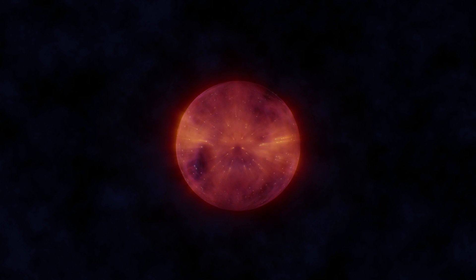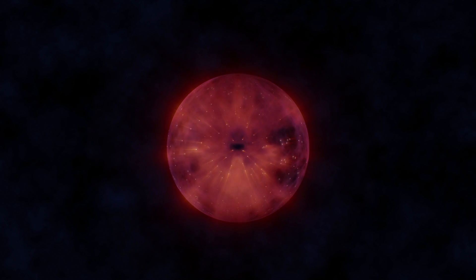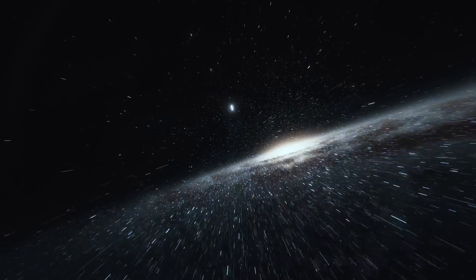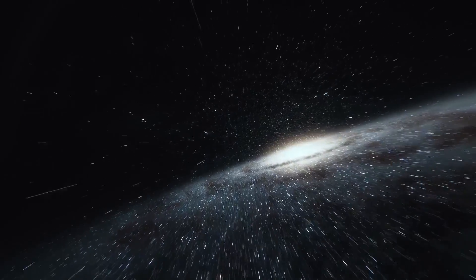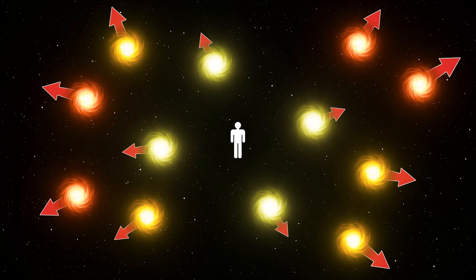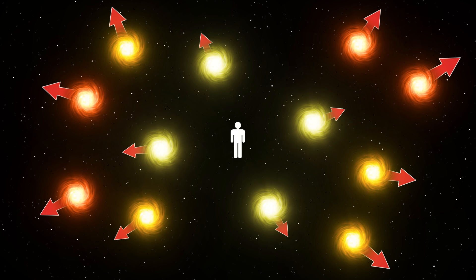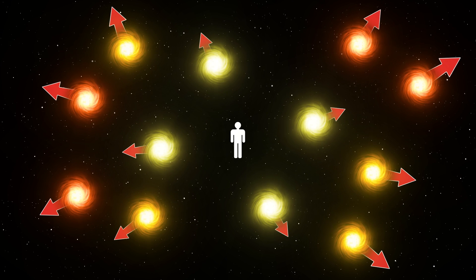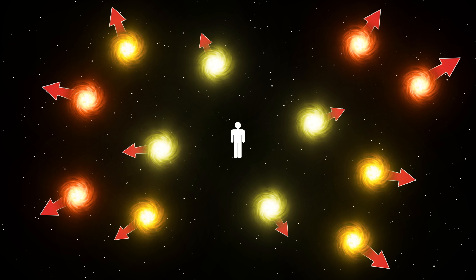However, not everyone was willing to accept the expanding universe model. In fact, the term Big Bang was coined as a form of mockery by one of Friedman's opponents, British astrophysicist Fred Hoyle, a proponent of the steady-state universe model. Another skeptic was the American astronomer Fritz Zwicky, a highly respected figure in the field who proposed an alternative explanation for Hubble's Law, the relationship between redshift and distance, that did not involve an expanding universe. He introduced the tired light hypothesis.